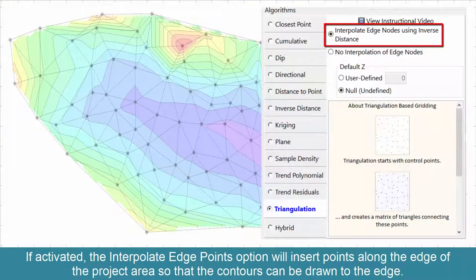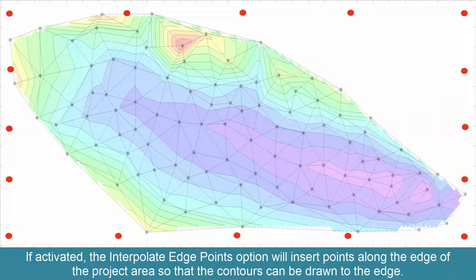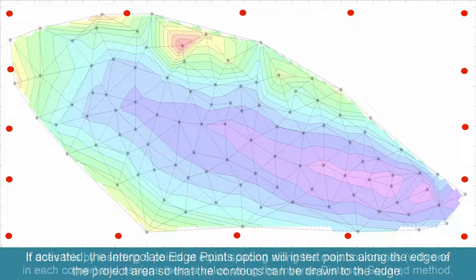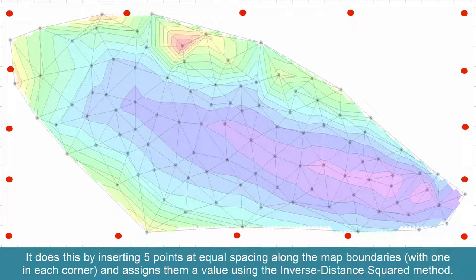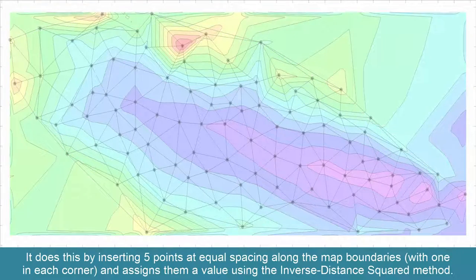If activated, the interpolate edge points option will insert points along the edge of the project area so that the contours can be drawn to the edge. It does this by inserting five points at equal spacing along the map boundaries with one in each corner and assigns them a value using the inverse distance squared method.